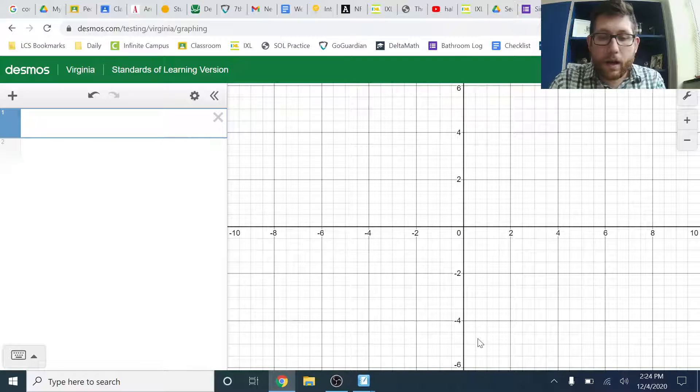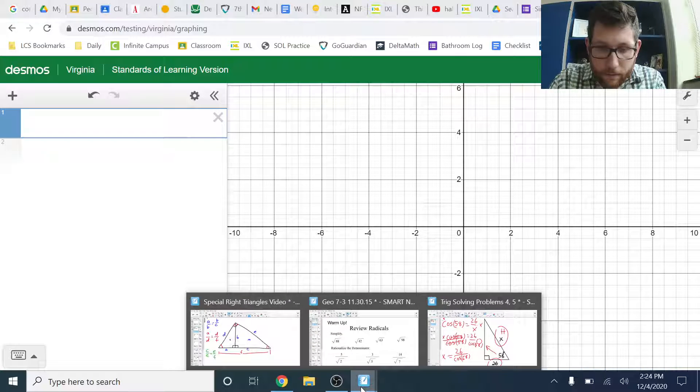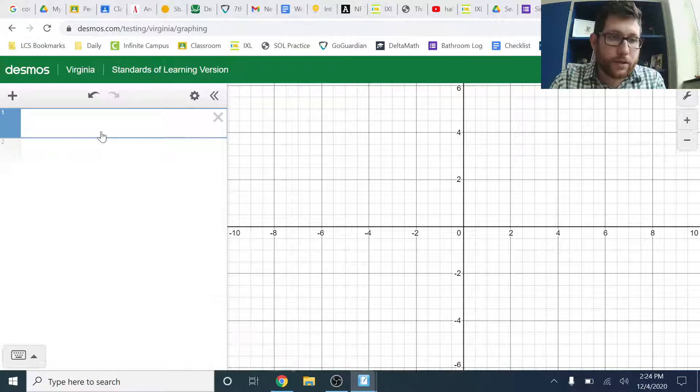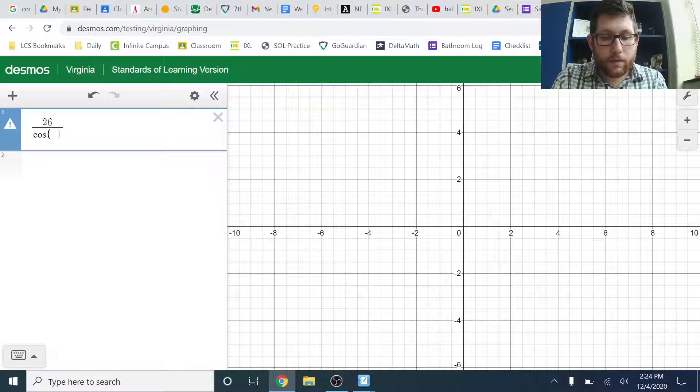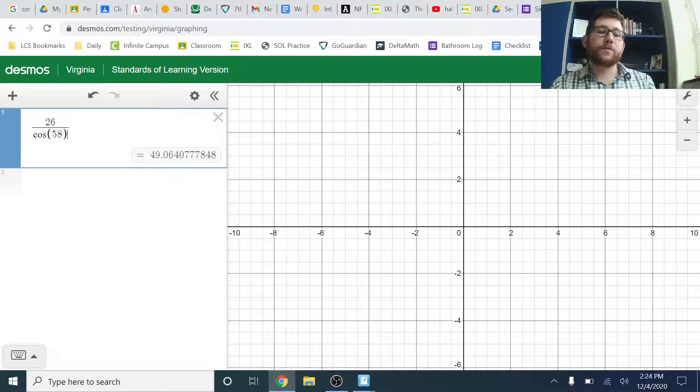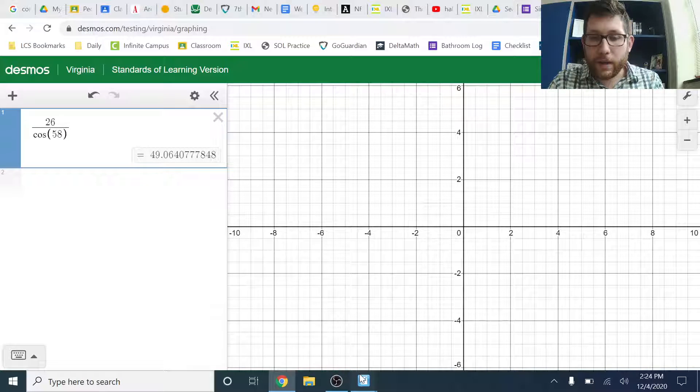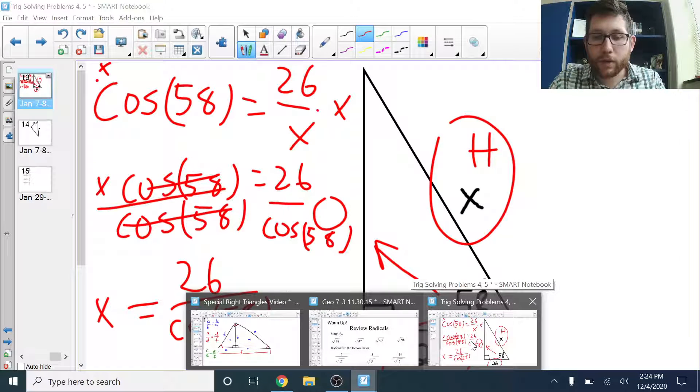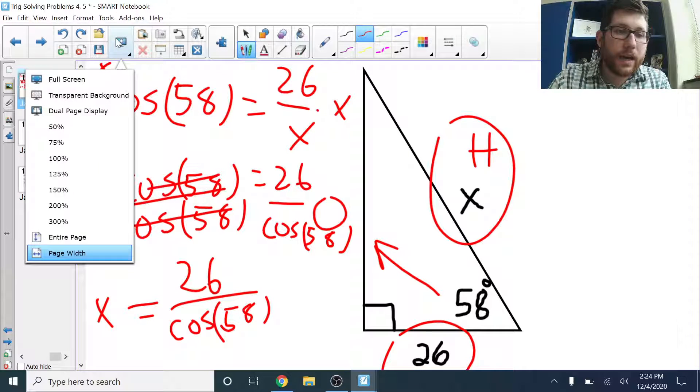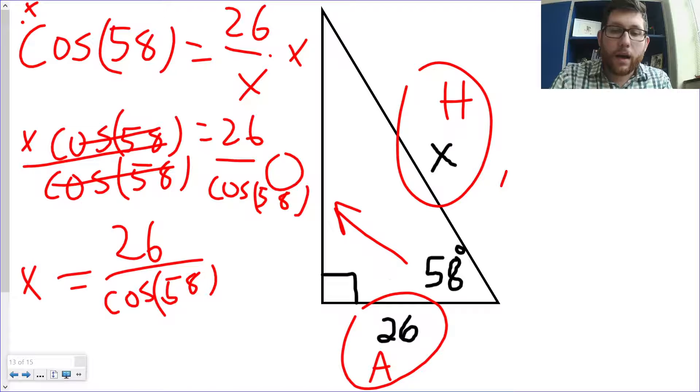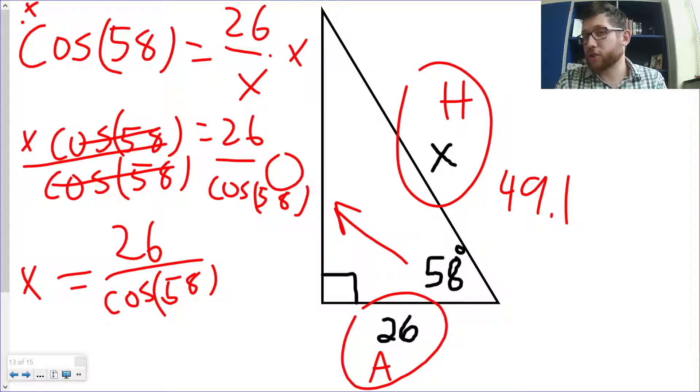Now, I'm going to go ahead and plug that into my calculator and see what I've got. 26 over cosine of 58. All right. And I get 49.06. We'll, again, round that to the nearest tenth. So, that'll be 49.1. And, again, use your hypotenuse as a guide if this answer makes sense or not. 49.1. It should be bigger than 26. And from the picture, it should be close to double that. And so, that seems to make sense here.